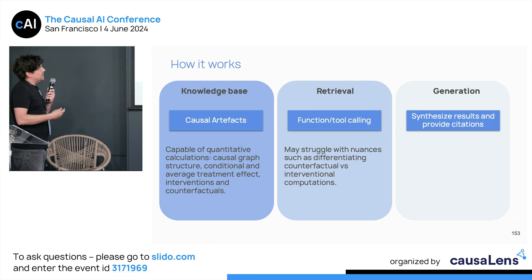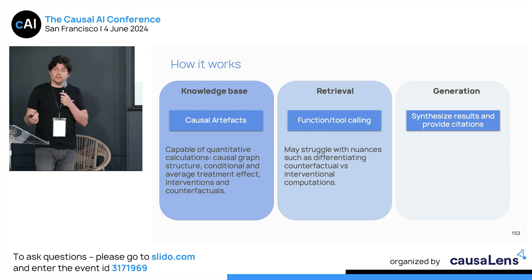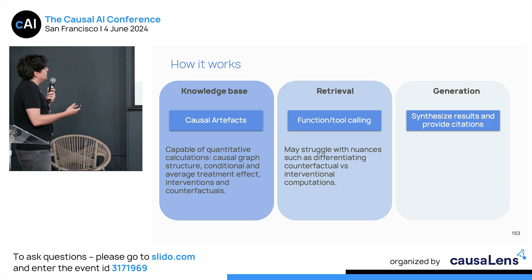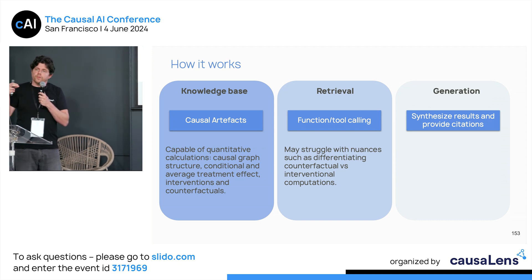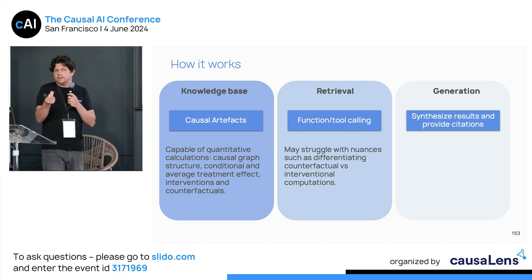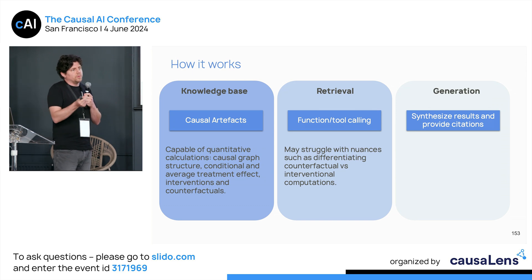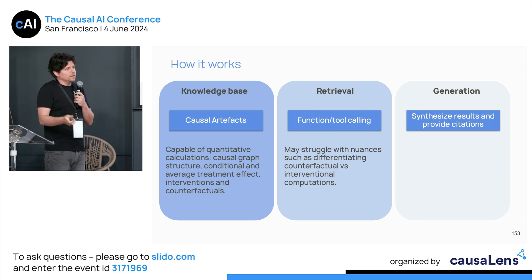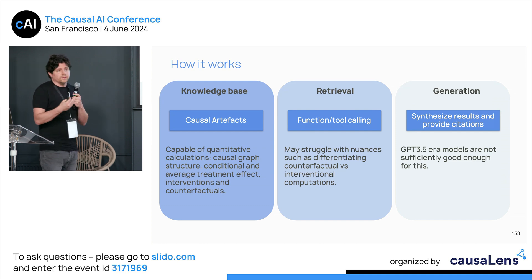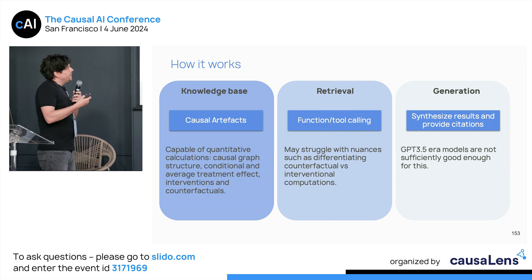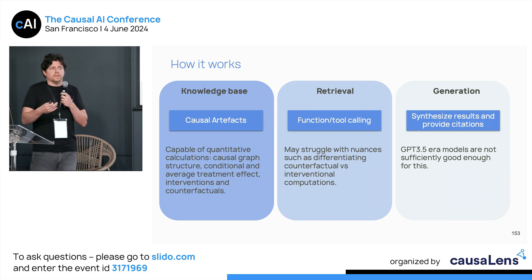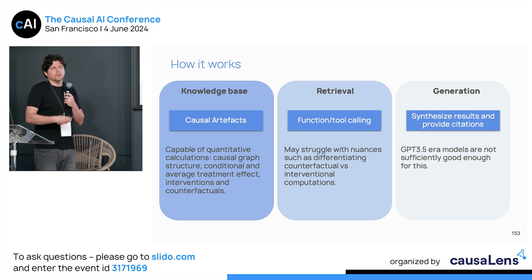There are still struggles and difficulties — for instance, it is hard for large language models to fully appreciate the differences between intervention and counterfactual. Depending on the size and era of the models, they are sometimes quite good at synthesizing things, but they may not properly cite information or may hallucinate.